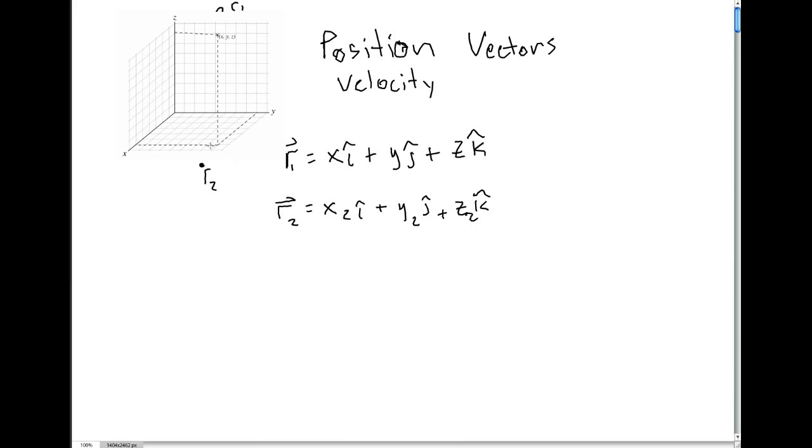So the displacement, or the difference, the distance between these two points, is given as delta R, or you just subtract these two vectors. How that works is you can subtract like terms here because we've got the unit vectors. So we can go x2 minus x1, get our little i-hat out there, and then we've got our y2 minus y1, and then we've also got our z2 minus z1. That gives us our displacement.